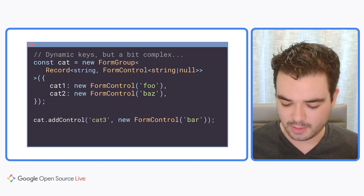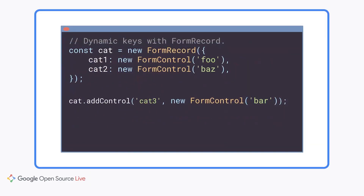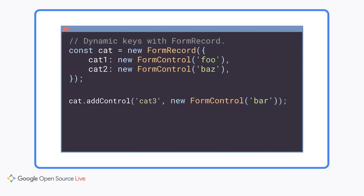A Record is used for open-ended objects where all keys are arbitrary strings but all values have the same type. If we just provide a Record to the form group type parameter, we get exactly that behavior. But this type is somewhat complex to always provide explicitly and can't be inferred. So as of Angular 14, we've introduced a brand new type called FormRecord, which lets you add or remove any named key but enforces that all controls must accept the same type. There is no need for an explicit type — this is completely inferred.